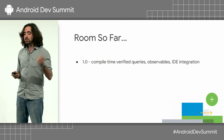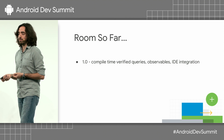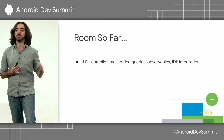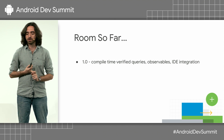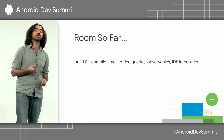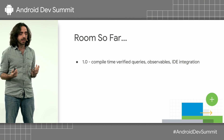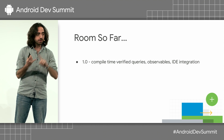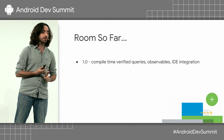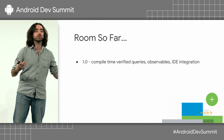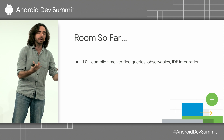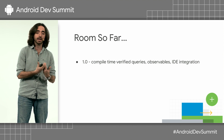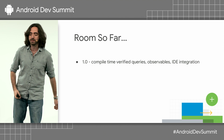Around two years ago, we shipped Room. We introduced compile-time safety, we introduced observability, and we introduced a strong IDE integration. As you can notice with Room and with navigation, this is a big team effort — we want to develop libraries together with Android Studio to provide a nice user experience.